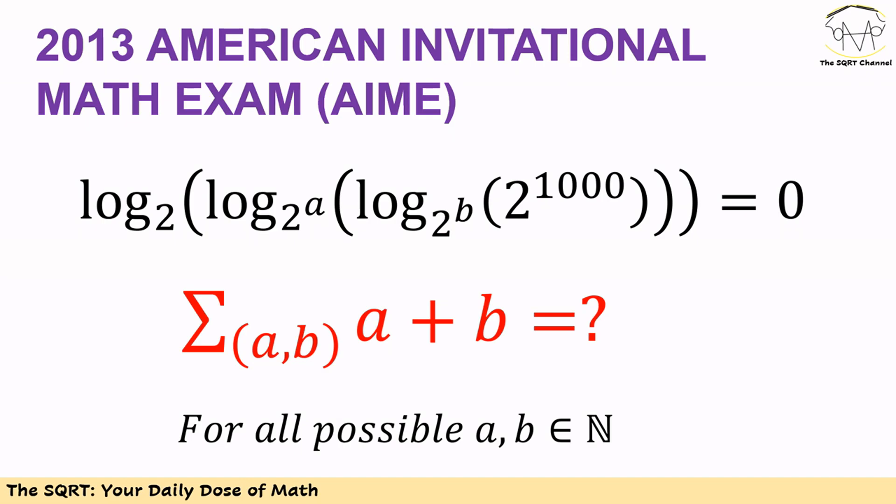AIME is a selective 15-question 3-hour test given since 1983. The AIME is the second of two tests used to determine qualification for the United States Mathematics Olympiad. The first is AMC or American Mathematics Competition.